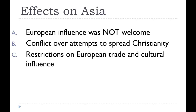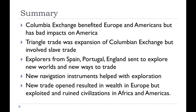In summary, it all started with the Columbian Exchange, which benefited Europe and the Americas but had bad impacts on the Americas. The Triangle Trade was an expansion of the Columbian trade and involved the slave trade that developed later. All these explorers were sent to find new worlds and new ways to trade. The four G's — God, Gold, Glory, and Gain — motivated them. New navigation instruments helped with exploration, and new trade opened up wealth in Europe but exploded and ruined civilizations in Africa and the Americas.